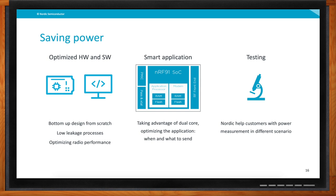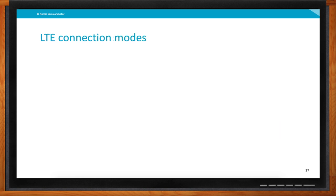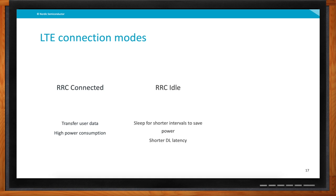Since cellular is pretty complex with a lot of variables, we can also help customers with dedicated power measurements for very different scenarios. Some customers want to do quite specific things to reach their power targets in cellular, so it's very good to be able to go to someone and ask for help with measurements. For cellular, there are three major connection modes to understand power. RRC connected mode is where you actually transfer data and use quite a bit of power. RRC idle mode is where you sleep for shorter intervals but wake up fairly often. PSM mode is where you sleep for longer cycles to really save power.